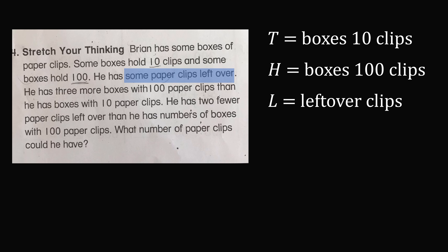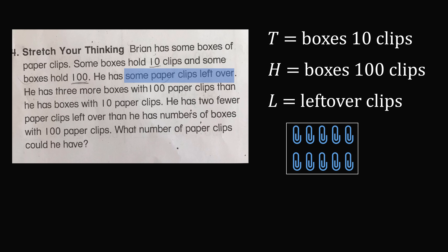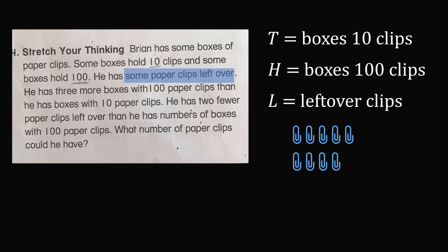So how many leftover clips could he have? He could have one, two, three, four, five, six, seven, eight, or nine. But what about ten? If there were ten leftover paper clips, these could all be put into a box of ten clips, so it's not possible to have ten clips left over. We need the number of leftover clips to be less than ten — a whole number from one to nine. This limits the number of possibilities we have to check.